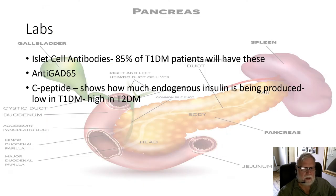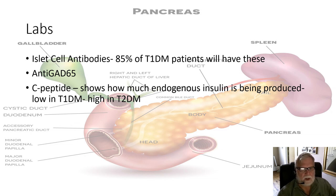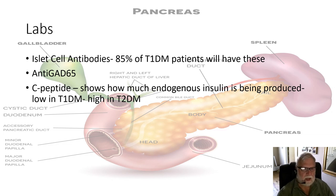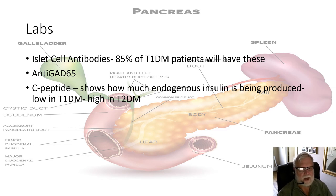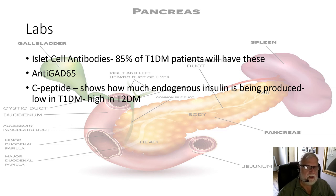The GLP-1s are especially important in the context of the ominous octet — there is a slide I'll post on Canvas that shows exactly where GLP-1 affects at least four or five of those different areas. Regarding laboratory testing, 85% of type 1 diabetics will have islet cell antibodies — not 100%, as they wax and wane and are sometimes easier to catch than others. They might also have anti-GAD antibodies. We already talked about the C-peptide.